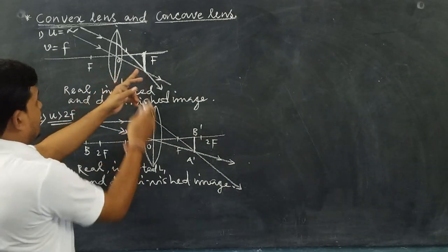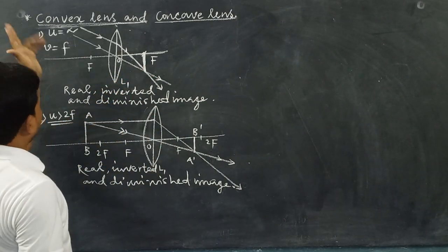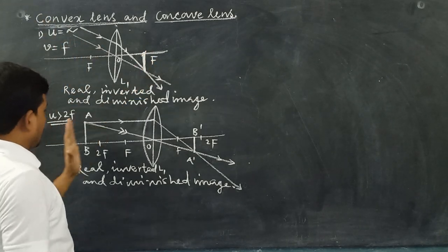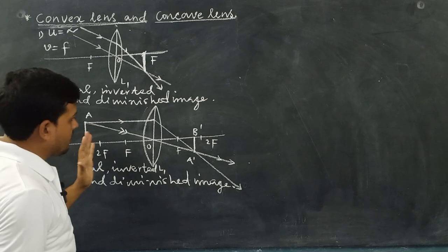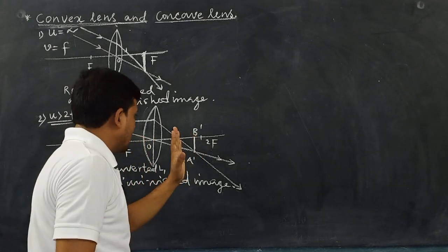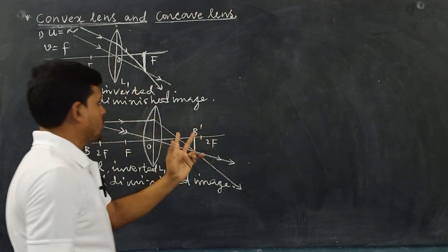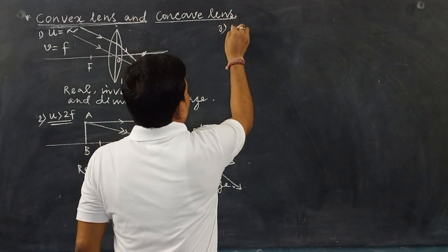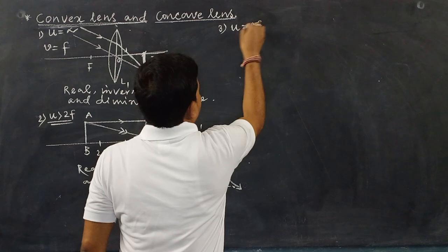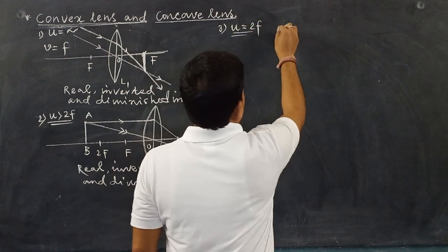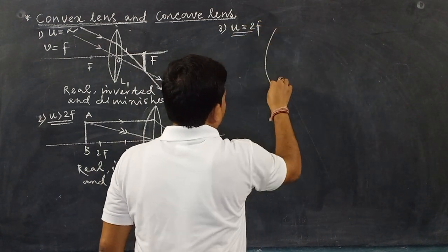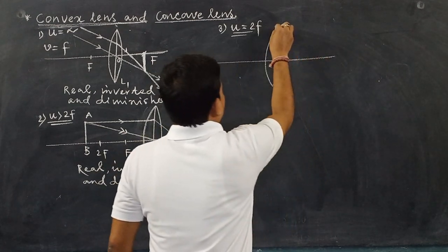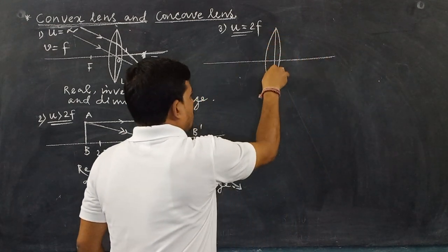When the object is at infinity, the image forms at the focus. As the object moves towards the lens beyond 2F, the image moves away from the lens. In the third condition, when the object is placed at exactly twice the focal length, an equal size image will be formed.